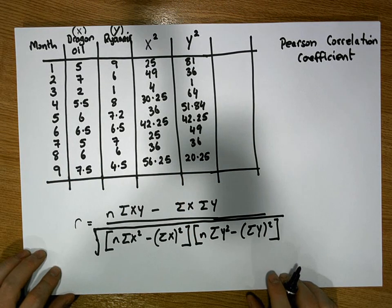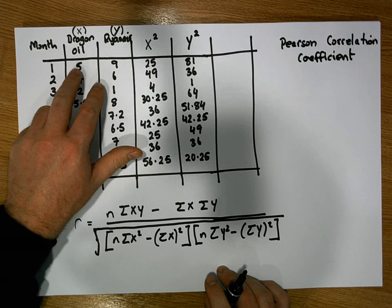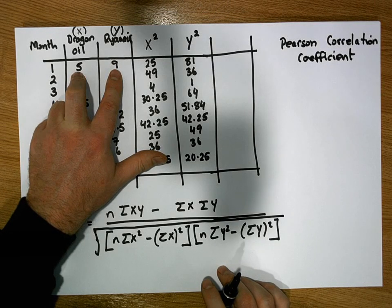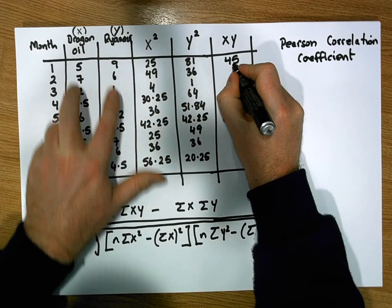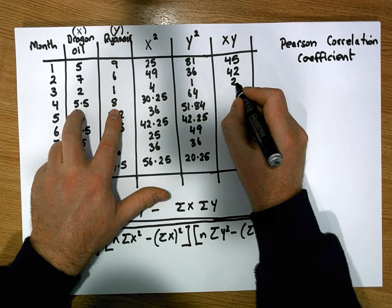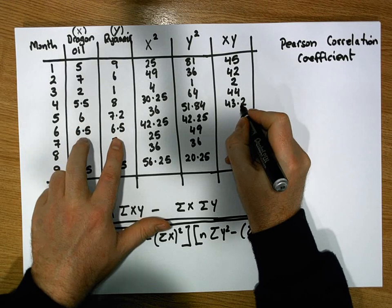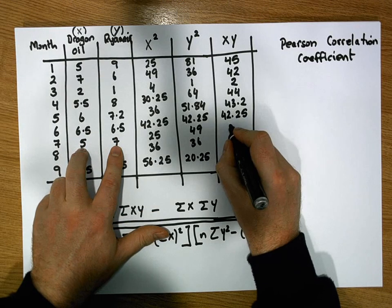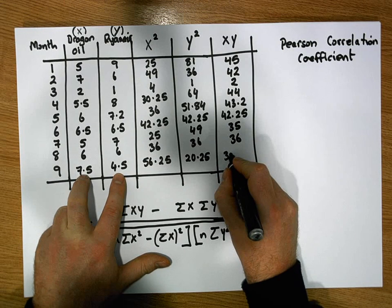Now we calculate the products of the x's and y's — each x observation multiplied by its corresponding y observation — to create the xy column. 5 times 9 is 45. 7 times 6 is 42. 2 times 1 is 2. 5.5 times 8 is 44. 6 times 7.2 is 43.2. 6.5 times 6.5 is 42.25. 5 times 7 is 35. 6 times 6 is 36. And 7.5 times 4.5 is 33.75.